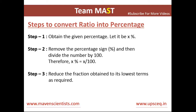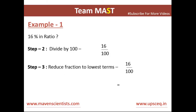Then divide the number by 100, so we get X percent equals X divided by 100. After that, we'll reduce the fraction to obtain its lowest terms in order to get the ratio. Let's see how it is done with some examples.